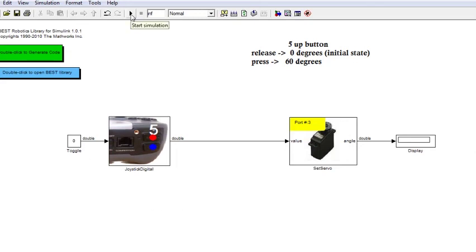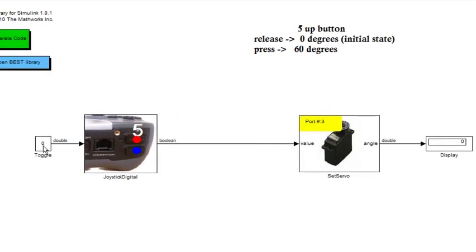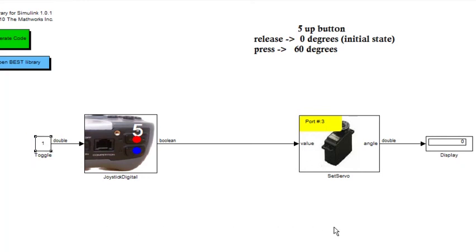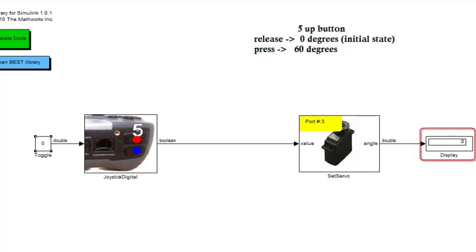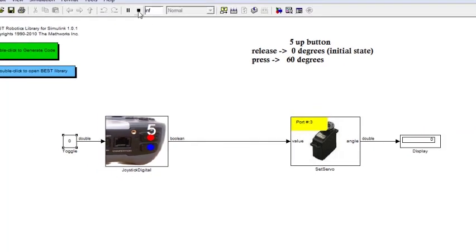When I run this simulation by clicking the play button, I'll be able to observe the output from my servo motor as an angle based on the input I provide. The Toggle block lets you toggle between a value of 1 and 0, which is essentially the output from the Joystick Digital button. When I double-click it, it toggles to 1 — meaning the button is pressed — but I see no output from the servo motor. Releasing the button also produces no change. Pressing: no output. Releasing: no output. Let me stop this simulation.